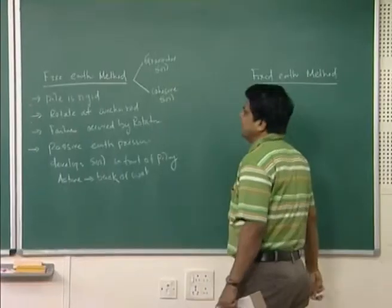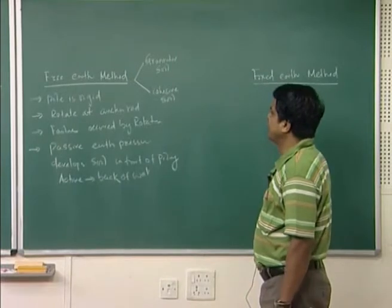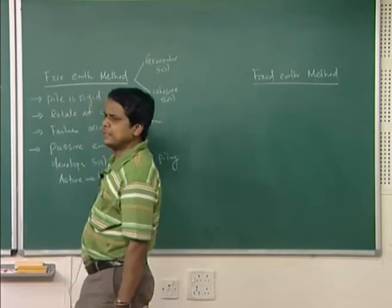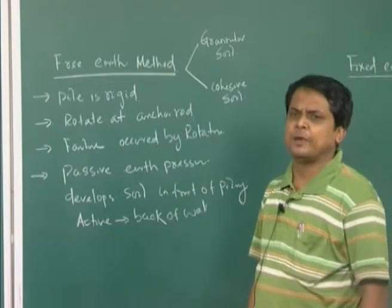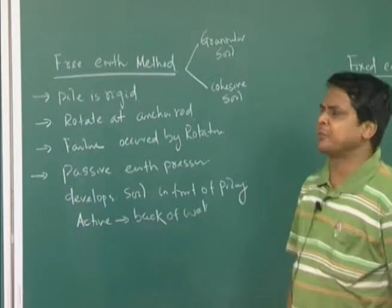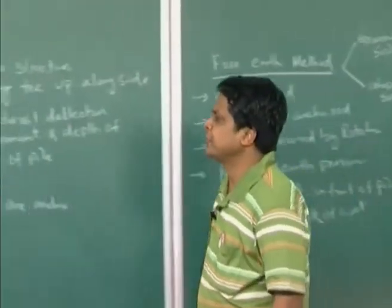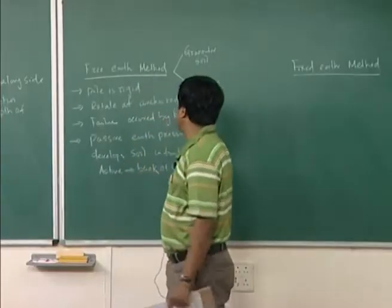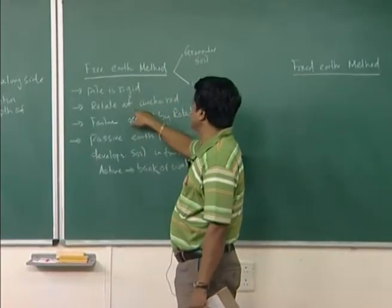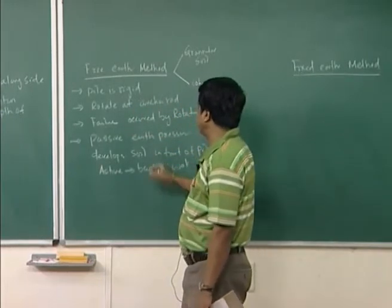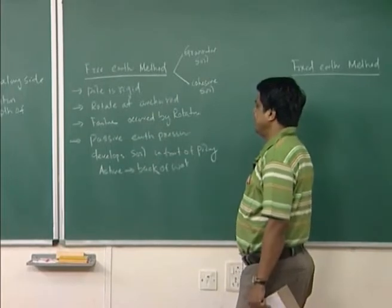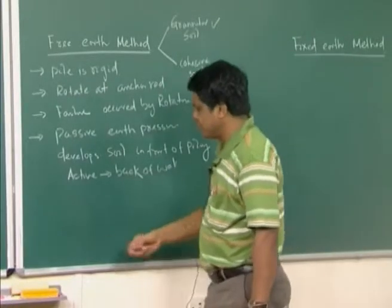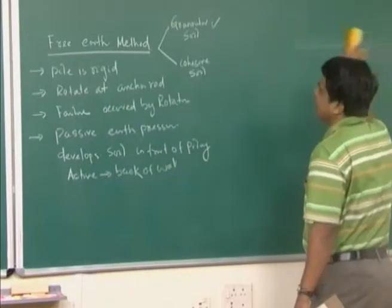In fixed earth method the anchor is fixed and there is no rotation. In the free earth method it has been assumed that the sheet pile is rigid — once it is rigid, it will not fail by means of bending but will fail by means of rotation. The rotation is assumed to occur along the anchor rod, so failure occurs by rotation at the anchor rod. We will start with granular soil of the free earth method.